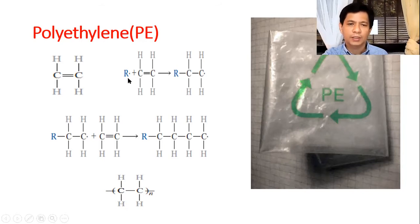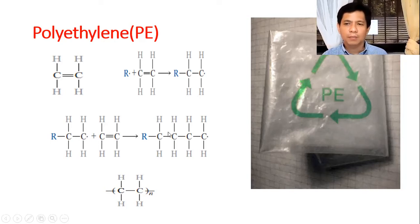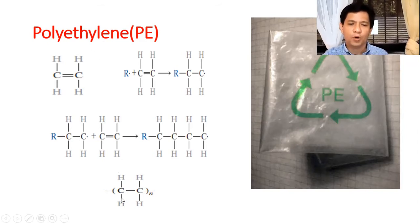The free radical reacts with ethylene, forming a compound that is itself a free radical. It then reacts with another ethylene molecule, and the chain becomes longer and longer. The general formula for polyethylene is C₂H₄ₙ.